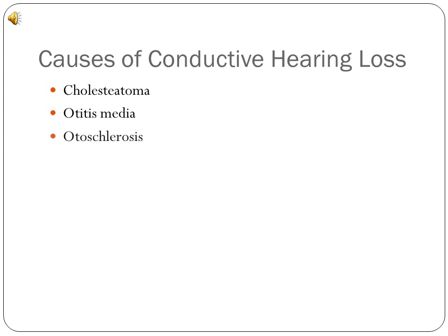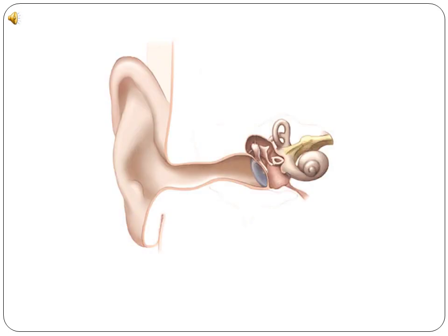Otosclerosis of the middle ear, in which most commonly the stapes undergoes extraneous bone growth, partially fusing its articulation with the incus or the oval window. And cerumen overgrowth and impaction, in which excessive earwax blocks the conduction of sound waves. Each of these conditions blocks the conduction of sound waves through the outer ear or the middle ear. Fortunately, these conditions can often be partially or completely corrected.